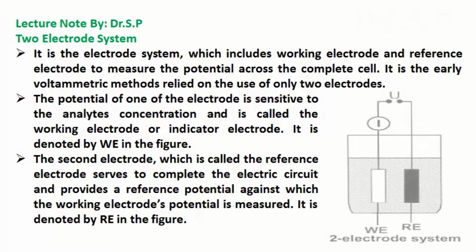Early voltammetric methods relied on the use of only two electrodes. The potential of one of the electrodes is sensitive to the analyte's concentration and is called the working electrode or indicator electrode, denoted by WE in the figure. The second electrode, called the reference electrode, serves to complete the electric circuit and provides a reference potential against which the working electrode's potential is measured. It is denoted by RE in the figure.